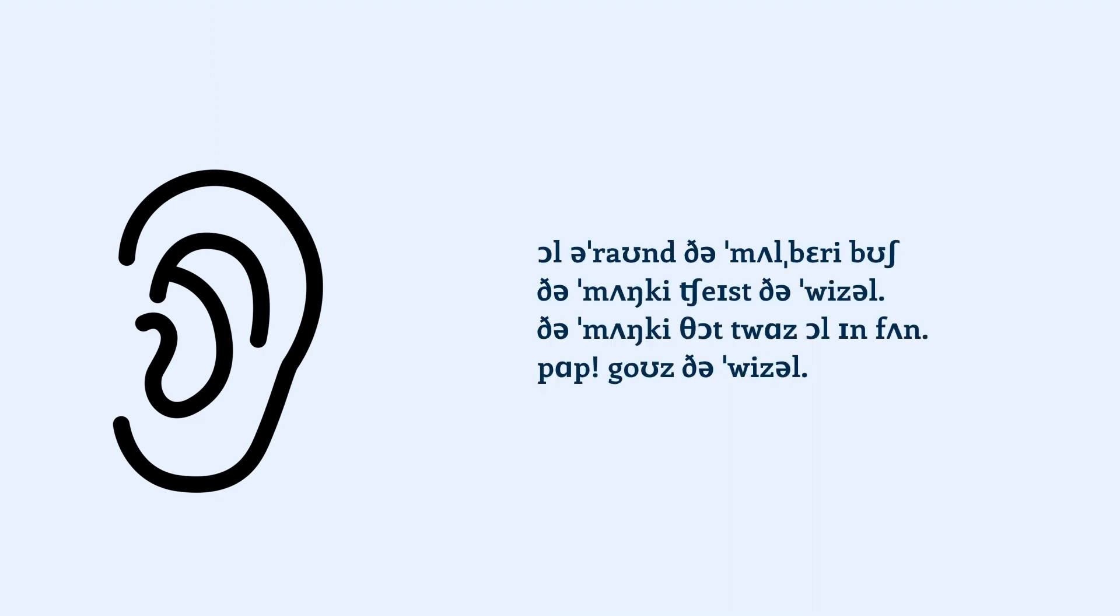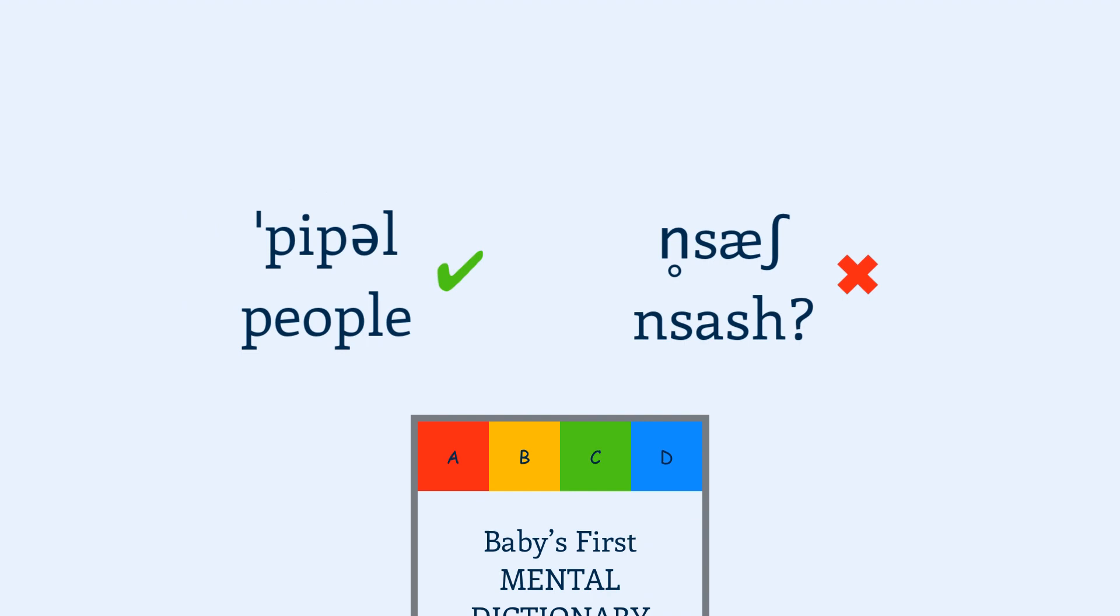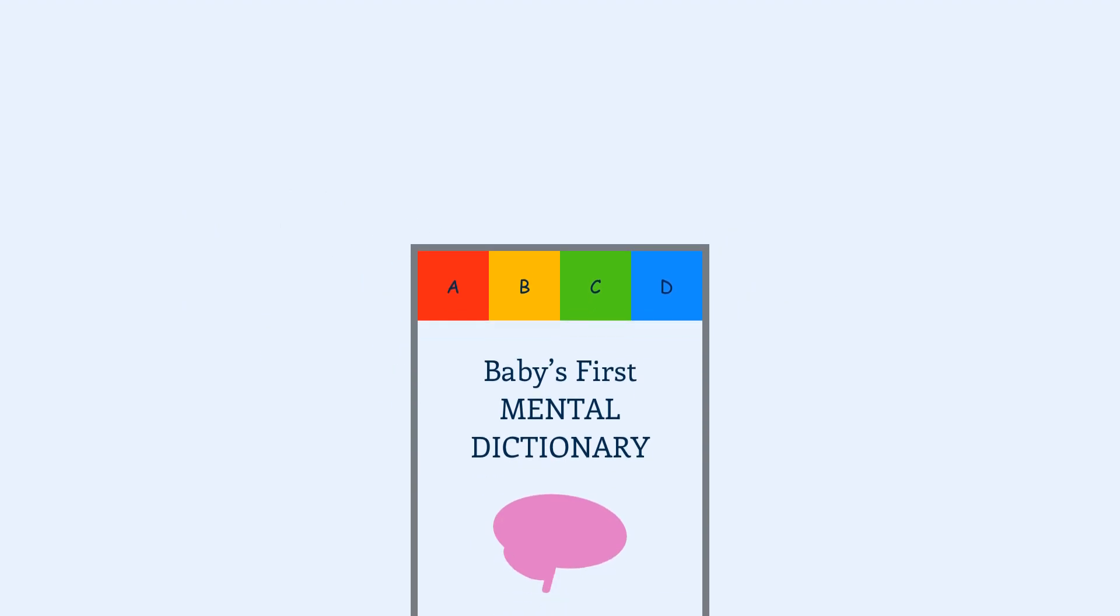This process applies not just to nursery rhymes about mulberry bushes, but other kinds of speech in general. As children listen to people talking, they notice certain sounds often go together, and certain sounds don't. So by the time they're about one year old, they get a sense of the common words in a language.